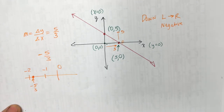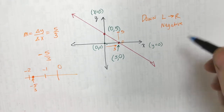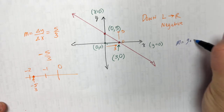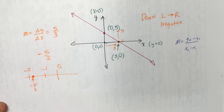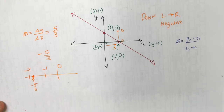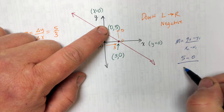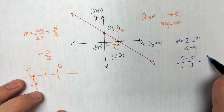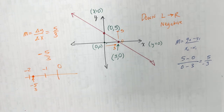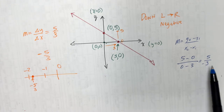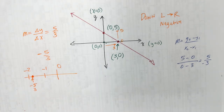We found the slope by counting. Now let's find it using the formula to make sure. y2 minus y1 over x2 minus x1. y2 is 5, minus y1 which is 0, over x2 which is 0, minus x1 which is 3. That's 5 over negative 3 — negative five-thirds. Without thinking, the formula gives us the sign correctly.